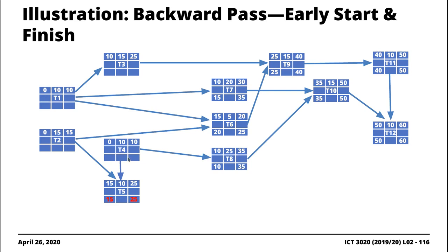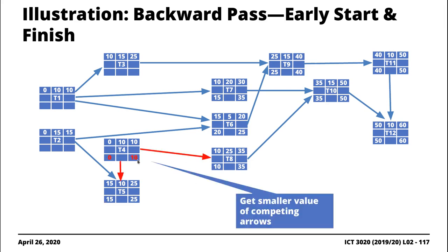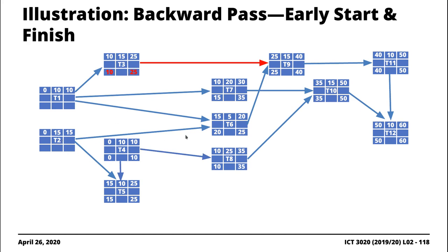For T4, two tasks depend on it. During the backward pass, when multiple tasks depend on an activity, take the minimum of the late start dates of those successor tasks. The minimum between 10 and 15 is 10, so we bring 10 here. For T3, one arrow points forward, so we just bring 25. For T2, two tasks depend on it; minimum between 20 and 15 is 15; subtract 15 from 15 to get zero. For T1, three tasks depend on it — T3, T7, and T6; minimum between 20, 15, and 10 is 10; subtract 10 from 10 to get zero. The backward pass is now complete.